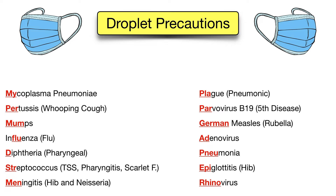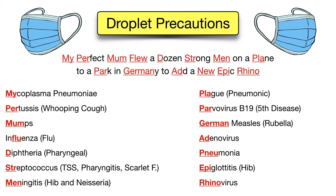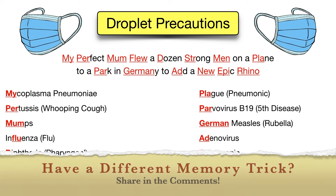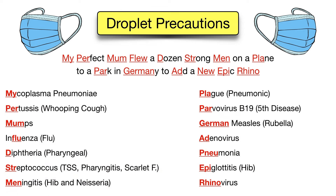As you can see, this is a long list and very difficult to remember. So use the mnemonic: 'my perfect mom flew a dozen strong men on a plane to a park in Germany to add a new epic rhino.' It may seem long at first, but it actually works really well. It's way easier to remember that mnemonic than trying to remember all those different infections.